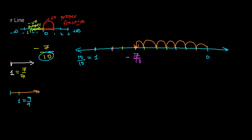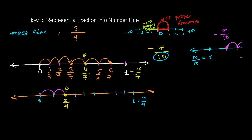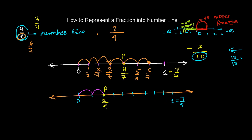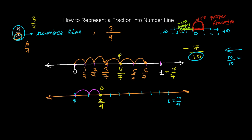For negative 9 over 10, count to the 9th position — that's 9 by 10 in the negative direction. For negative 2 by 10, count 1, 2 — that's negative 2 by 10. That's how you represent a fraction on the number line. In the next video, we'll look at how to represent an improper fraction on the number line. See you in the next video, goodbye!